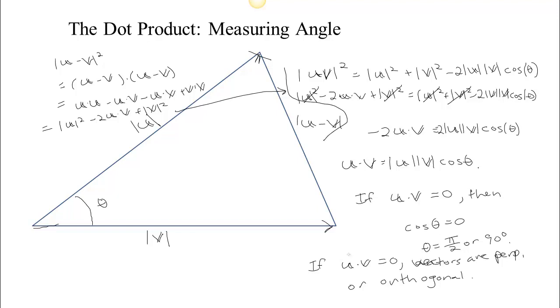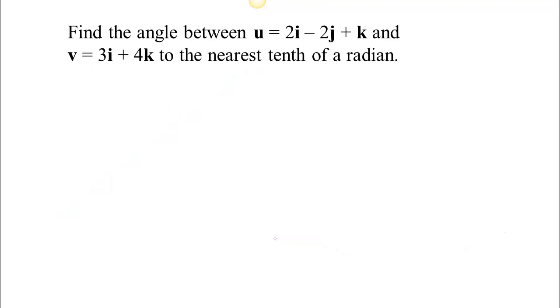You also have to consider the edge case where one of the vectors happens to be the zero vector. Let's look at an example.